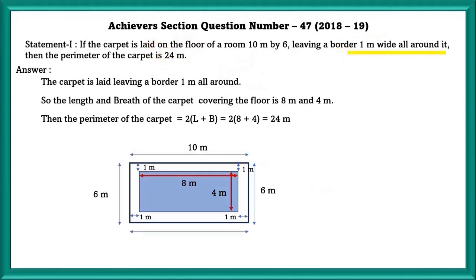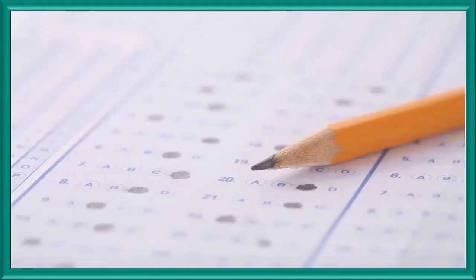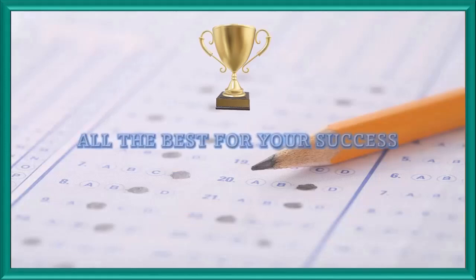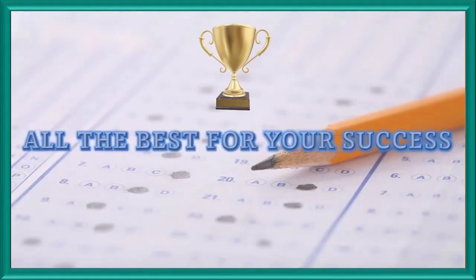Here they are saying that the carpet is laid leaving a border of one meter all around it. So you just shouldn't subtract one meter from the perimeter, but you should subtract all around it, which means you should subtract two from the length and two from the breadth. Be careful about this. I hope you all do well and all the best for your success. I'll be cheering you on from here.